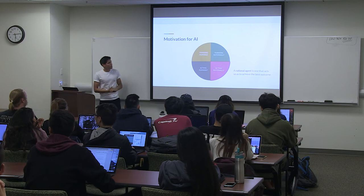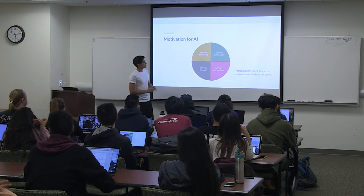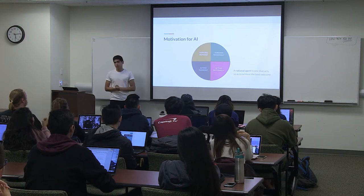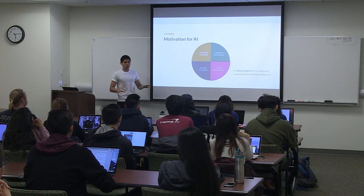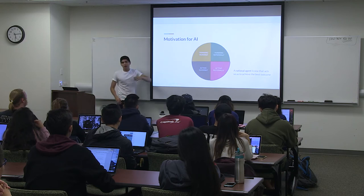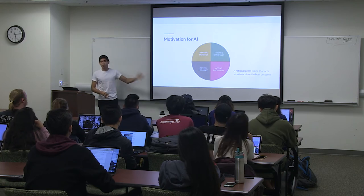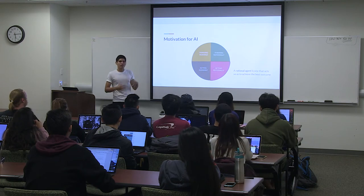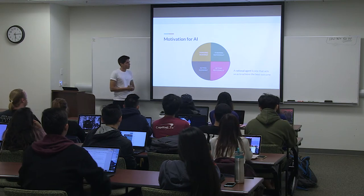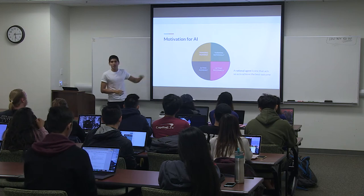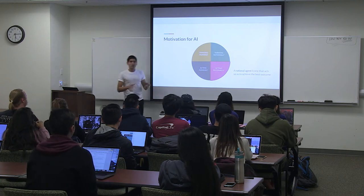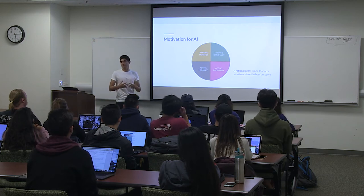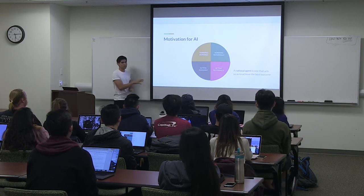There are four different approaches to AI: thinking humanly, thinking rationally, acting humanly, and acting rationally. The only one we're going to focus on is acting rationally, because that is what most researchers are actually focusing on. Taking the acting rationally approach, what we're trying to create is a rational agent that is able to take actions so as to achieve the best outcome.